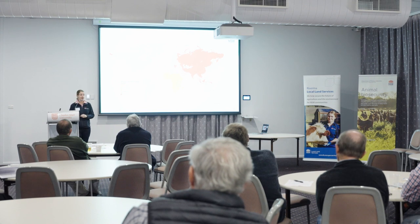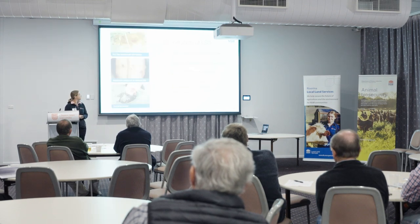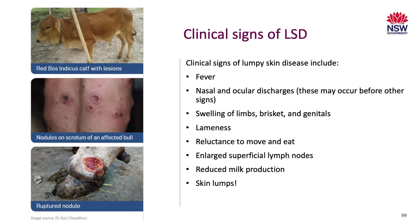No LSD cases yet, but active surveillance is ongoing. Clinical signs of lumpy skin disease are fever, depression — these animals are highly unwell — nasal and ocular discharges, swelling of the limbs, lameness, reluctance to move and eat, enlarged superficial lymph nodes, reduced milk production, and skin lumps. The skin lumps actually occur late in the disease; depression and fever are the initial signs, then the lumps develop. Morbidity can be up to 45%, while mortality is quite low — similar to foot and mouth disease — at one to five percent.